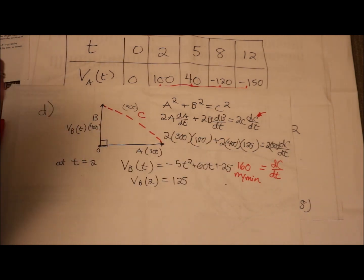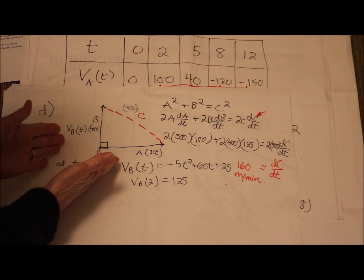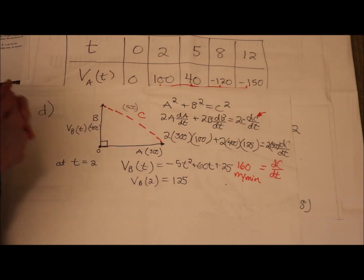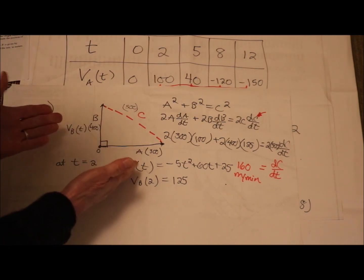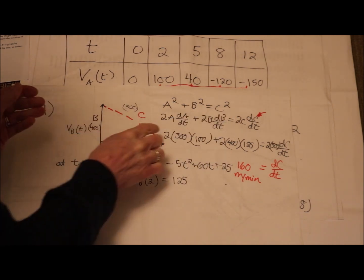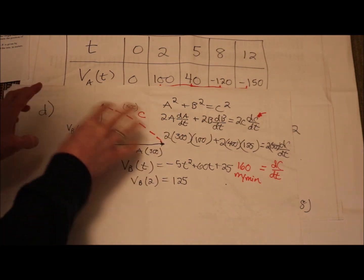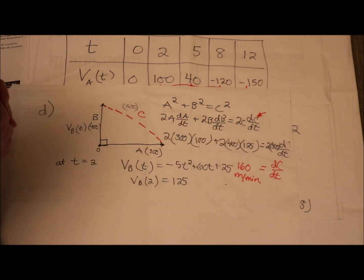Again, we drew a picture. We came up with an equation that related all of our variables, all the players. We took the derivative with respect to time. We filled in everything we knew, did a little bit of work to find some things, and then just used algebra to solve for dC dt. Nice work.